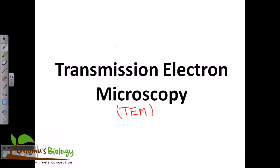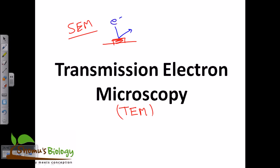Just like other types of electron microscopy, in TEM we use electrons as the illumination source, compared to light microscopy which uses light. In scanning electron microscopy, we use the particle nature of the electron — the electron bounces off the surface of the specimen, and a detector captures that to determine the surface structure of the sample.